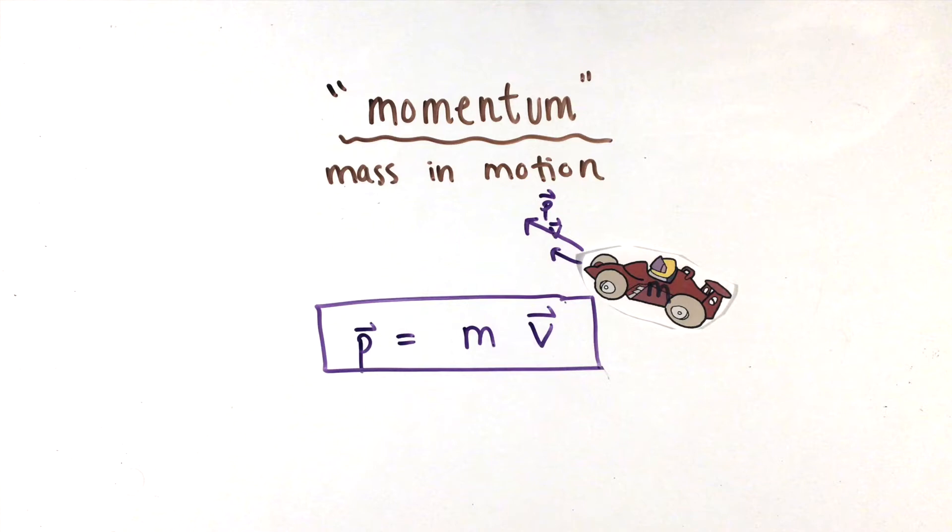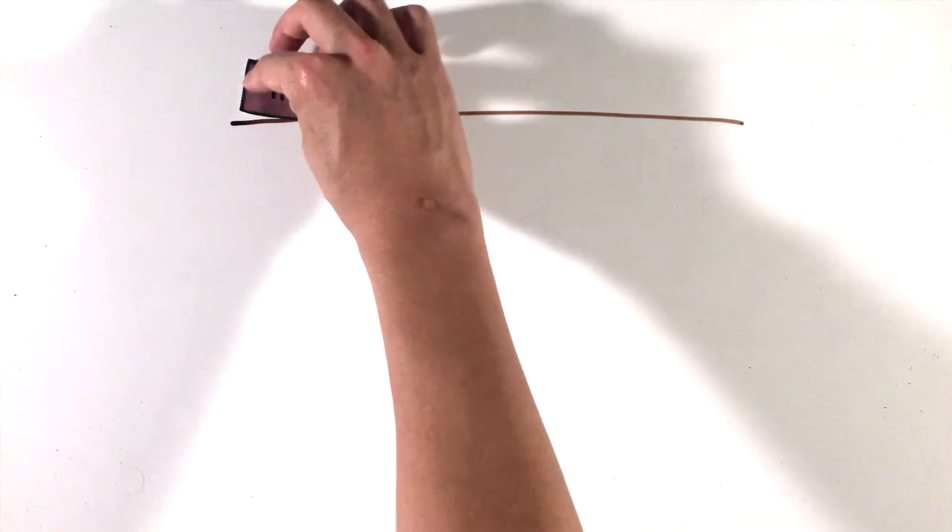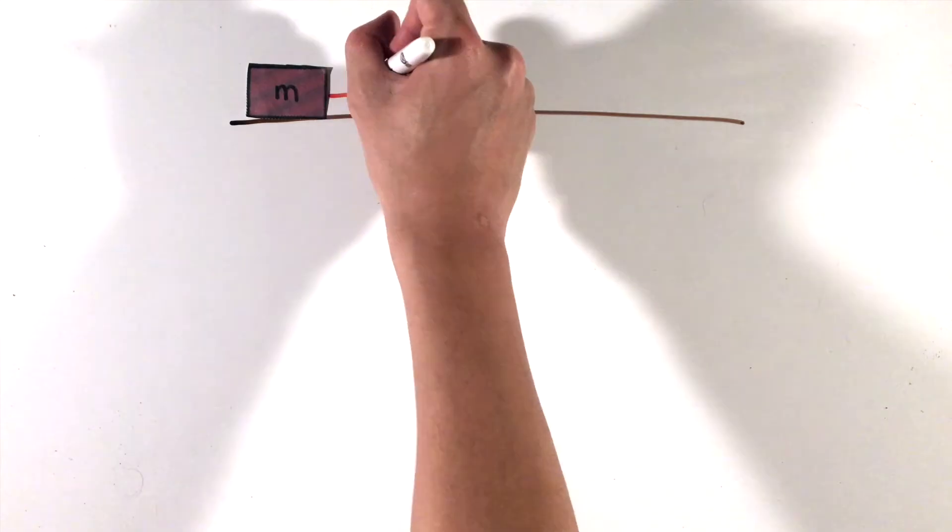In other words, the more massive and the faster an object is going, the more momentum it has. Objects can gain or lose momentum through external forces, and this change in momentum is called impulse.